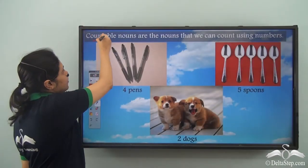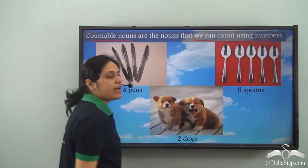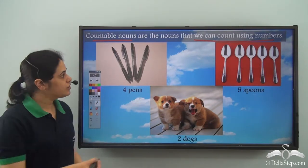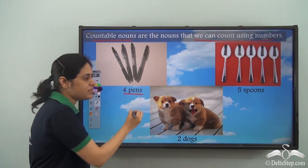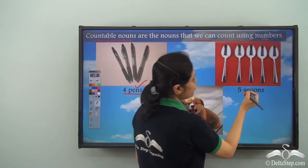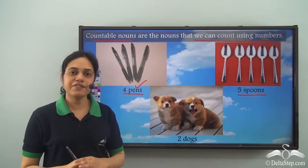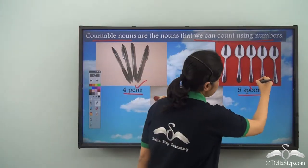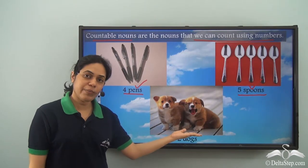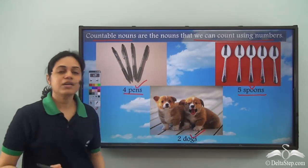Countable nouns are the nouns that we can count using numbers. For example, we have four pens here, so pens is a countable noun. Spoons can also be counted — we have five spoons, so spoons is a countable noun. The number of dogs can also be counted, so dogs is a countable noun.